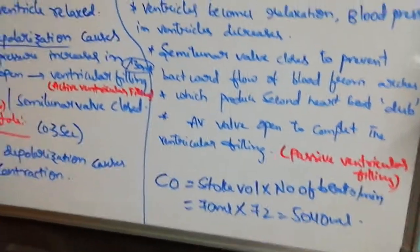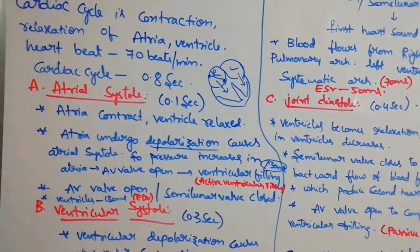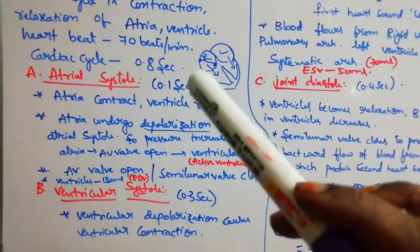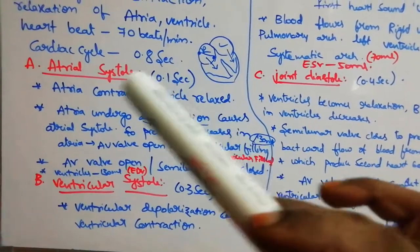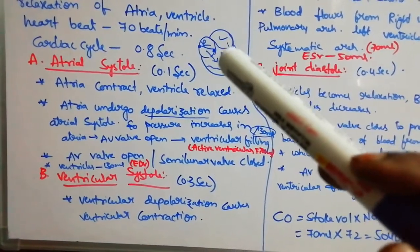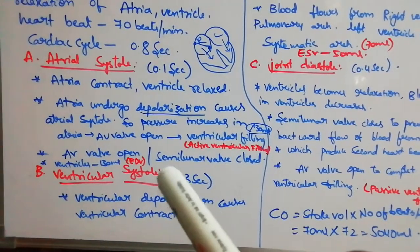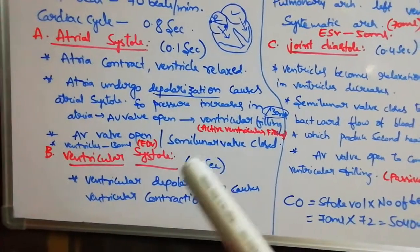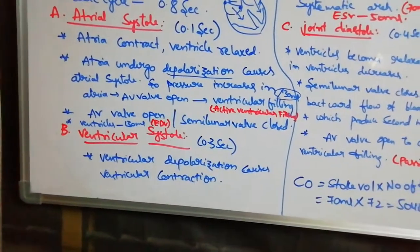In summary: cardiac cycle is the contraction and relaxation of atria and ventricle, at 70 beats per minute, completing in 0.8 seconds. During atrial systole, the SA node generates impulses, atria contract, pressure increases, AV valves open, and blood flows actively from atria to ventricle. AV valves are open, semilunar valves are closed, and blood volume in the ventricle reaches 130 ml — the end diastolic volume.